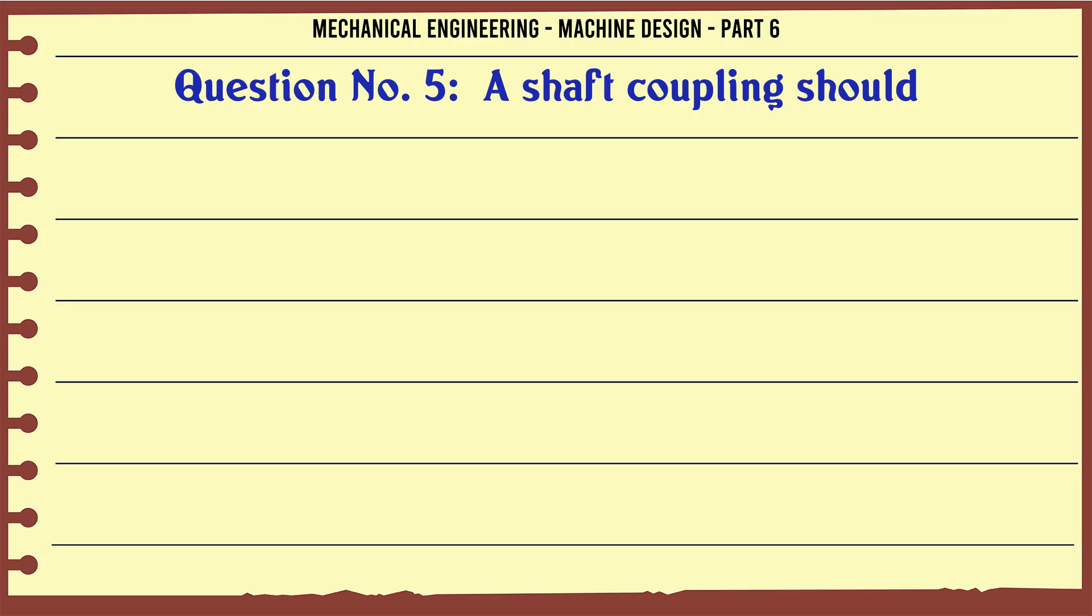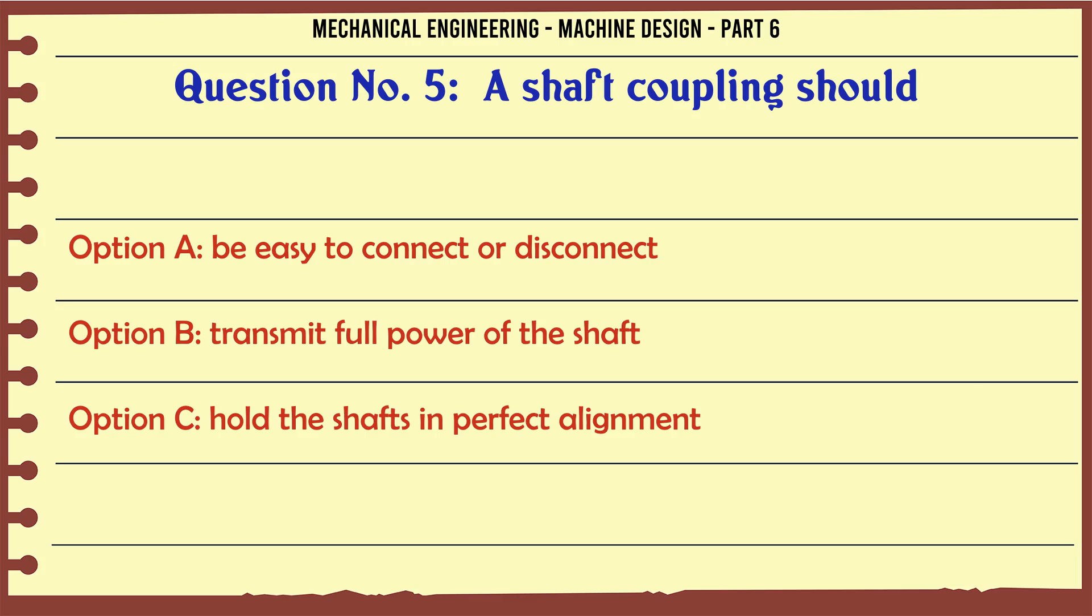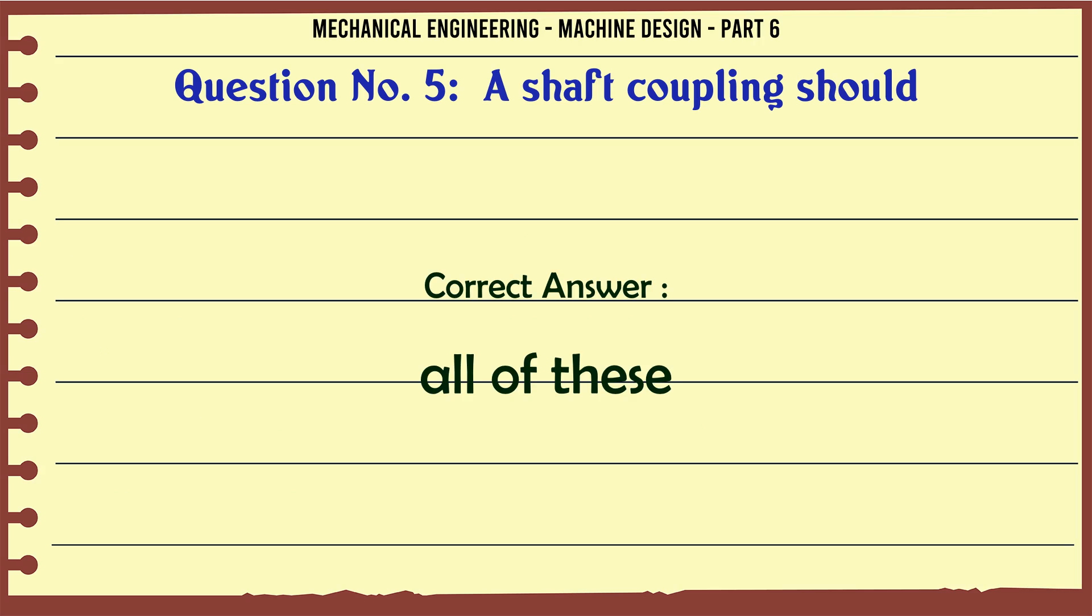A shaft coupling should: A) be easy to connect or disconnect, B) transmit full power of the shaft, C) hold the shafts in perfect alignment, D) all of these. The correct answer is all of these.